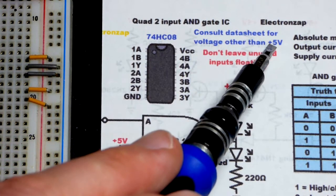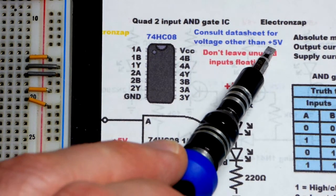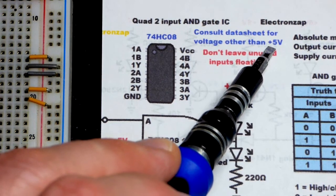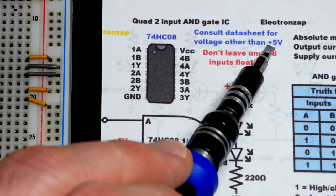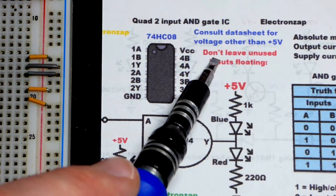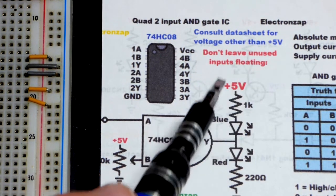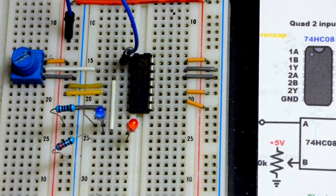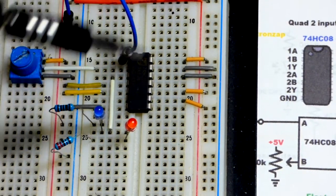So again always consult the data sheet. And also with these integrated circuits, these high-speed CMOS ones, the HC versions, you have a range of voltages you can use. But generally speaking these integrated circuits, five volts is what you should shoot for. You got to look at the data sheet to use different voltages.